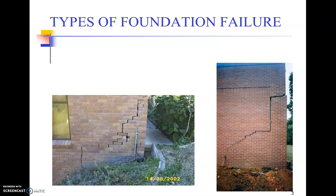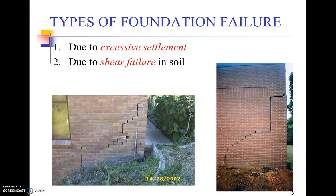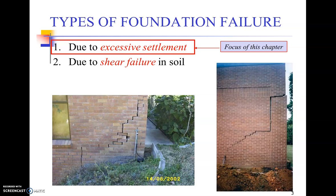Our focus in Geotechnical Engineering 2 will be on shallow foundations mostly. When these foundations fail, they give indications in the form of apparent cracks in the corners or walls of structures. The cracks may be horizontal, a mixture of horizontal and inclined, or purely inclined, as seen in the pictures shown. These are generally due to excessive settlements or shear failure of the foundations. We will be focusing on settlement failures in these lectures.